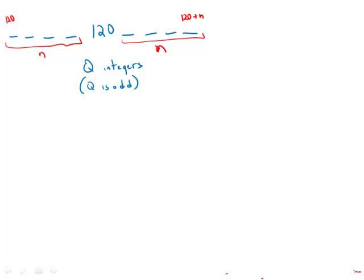How many do we have total? We have n plus 1 plus n, which is 2n plus 1. This is the total number, and of course this total number has to equal Q. So this allows us to solve for n in terms of Q.